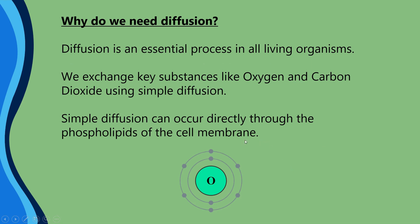Why do we need diffusion? It's an essential process in all living organisms. We need it to obtain oxygen from the air for aerobic respiration, and we need it to release carbon dioxide. One important thing is that simple diffusion can occur directly through the phospholipids of the cell membrane — it does not require a specific transport protein like some of the cell transport mechanisms we're going to look at in later videos.